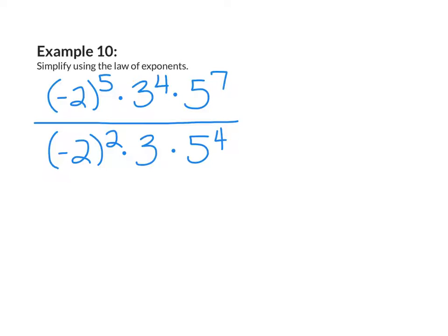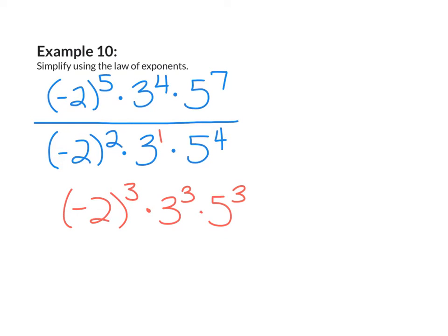Example 10: Simplify using the law of exponents. In this example, my numbers are bases, so my bases will not change — I will only be subtracting my exponents. For my first base, that will be negative 2: 5 take away 2 gives me 3. My next base is 3: 4 take away 1 gives me 3. And my last base is 5: 7 take away 4 gives me 3. So my answer is negative 2 to the 3rd power times 3 to the 3rd power times 5 to the 3rd power.